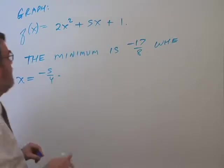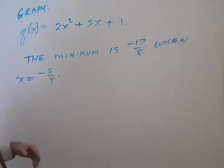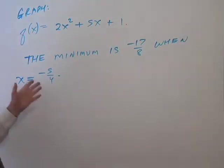Graph the function f of x equals 2x squared plus 5x plus 1. In the last video we determined where the vertex is. When x is negative 5 fourths, the y value is negative 17 eighths.